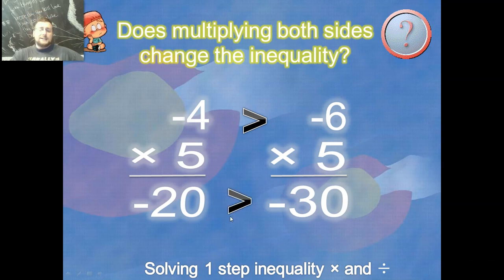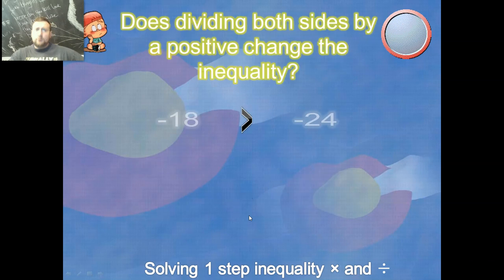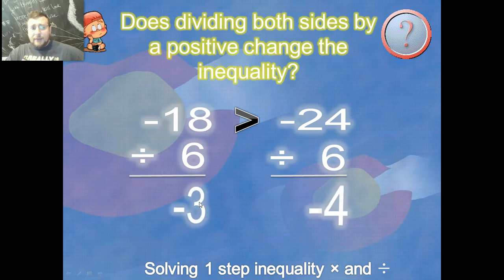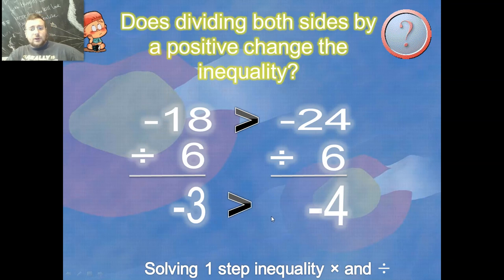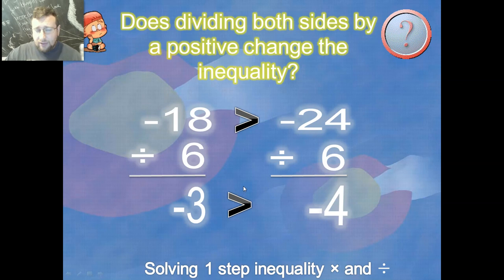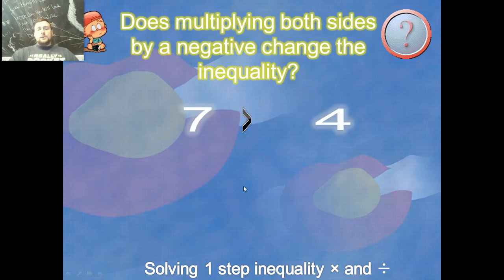What if we divide both sides by the same thing? Take negative 18 and negative 24: divide both sides by six, you get negative 3 on the left and negative 4 on the right. Negative 24 was smaller than negative 18, and negative 4 is smaller than negative 3 — the sign stays in the same direction because we divided both sides by the same. It seems like the pattern holds, as long as you do the same thing to both sides — with an exception.